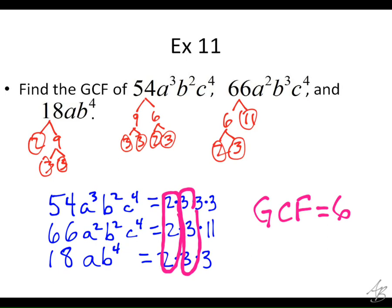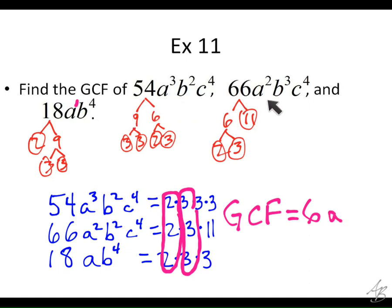Now the variable part — let's go one letter at a time. How many A's are going to be in our GCF? We want to use the smallest exponent on A, which is just A to the first power — that's the smallest. How about B's? There are 4 here, 2 here, and 3 here — the smallest is B squared. How about C's? These two have C to the 4th, but this one has 0 C's — so the smallest exponent is 0, meaning there are no C's in our GCF.